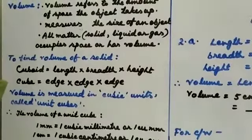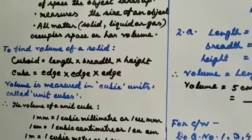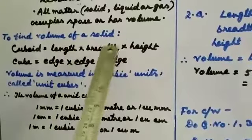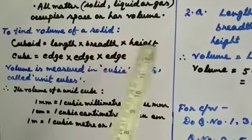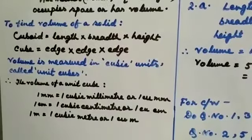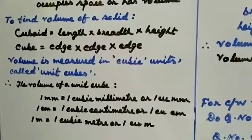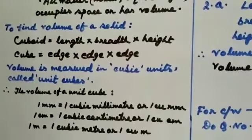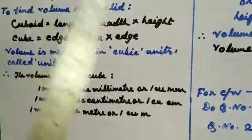Now, how will we find the volume of a solid? Here, solid means cuboid and cube. To find the volume of a cuboid, you multiply length by breadth by height. For a cube, it is edge multiplied by edge multiplied by edge. A cuboid has the shape of a rectangle — its opposite sides are the same. Examples of cuboids include doors and windows. For a cube, all sides are the same — length equals breadth equals height.